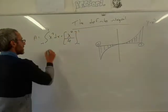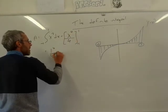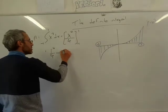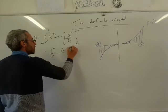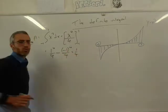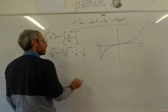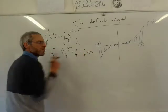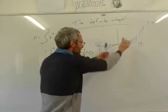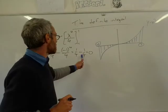Substituting 1: 1 to the power of 4 divided by 4, minus substituting minus 1: minus 1 to the power of 4 divided by 4. The answer is 1/4 minus 1/4 = 0. We're getting area 0 — but clearly it's not 0. Why are we getting 0? Because on the positive side the area is above the graph (positive area), and on the negative x-side the area is below (negative area), and they cancel.